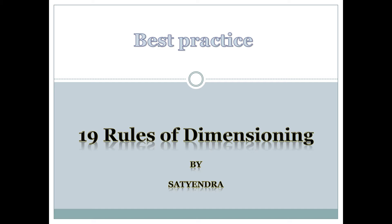Hello friends, Satyendra here. In this video, let's talk about the 19 rules for dimensioning. These are standard rules which we follow in day-to-day drawing activities, and they are applicable for any design tool including CREO, SOLIDWORKS, SOLIDEDGE, CATIA, UNIGRAPHICS, INVENTOR, AUTOCAD, and many other design tools. Let's understand these rules in detail.